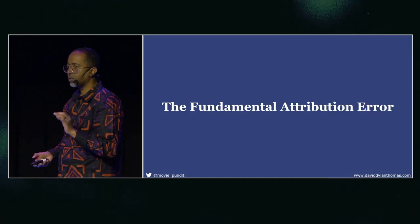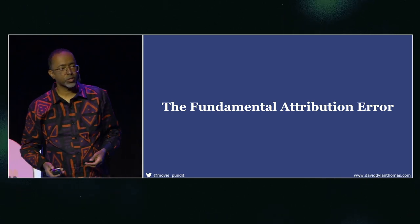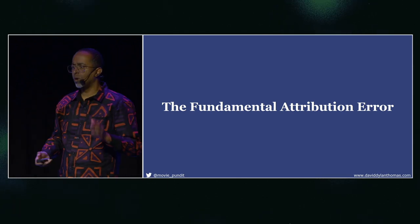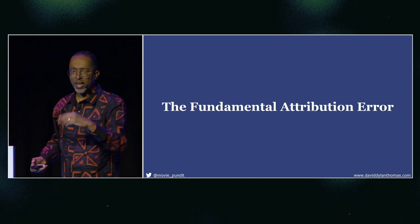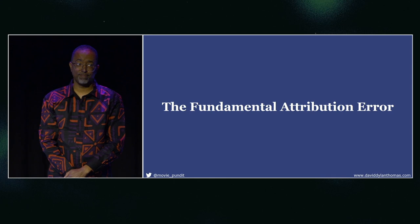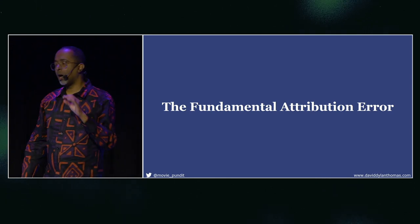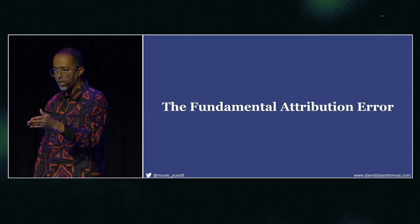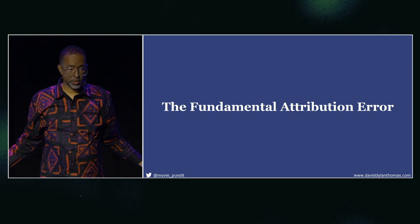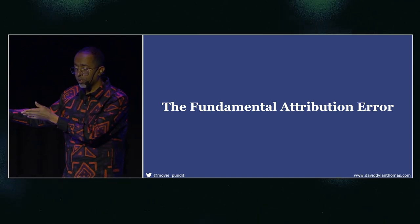Part of the reason for this is something called the fundamental attribution error. If I were to see somebody run a red light, I might think: what a scofflaw, what a terrible driver, they're so impatient, they're dangerous. But if I run a red light — oh, I was late for work, there was someone honking behind me. I attribute their behavior to something about them personally, and I attribute my behavior to my circumstances. It never occurs to me that they might be late for work.